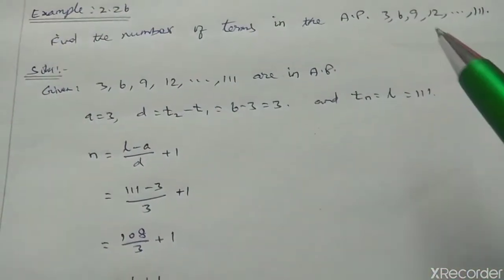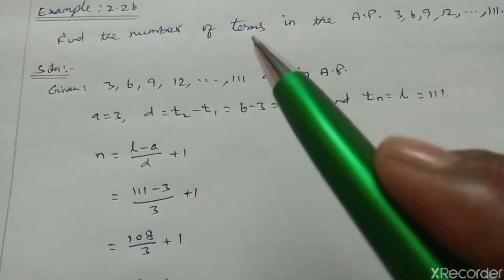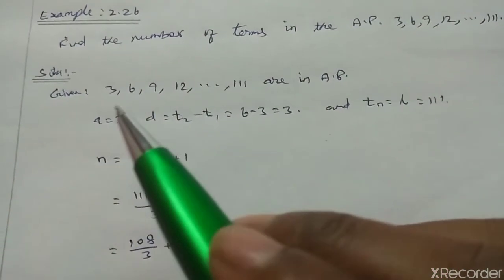Given: the terms are in AP. We need to find the number of terms n. First, a equals 3, the first term.